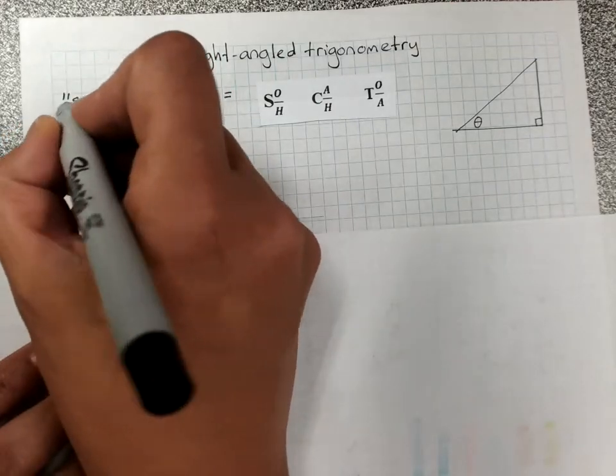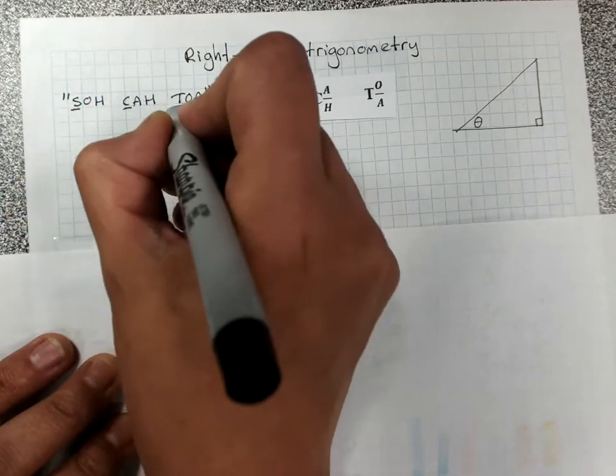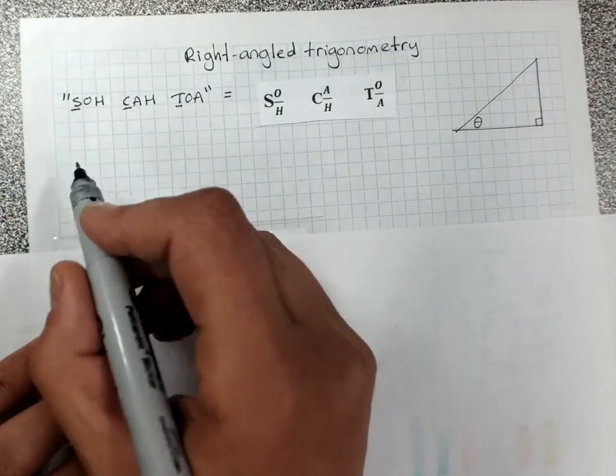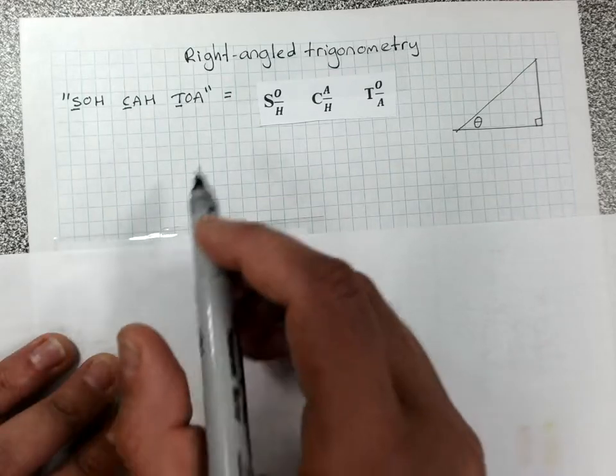So you remember, the first letter, S, C and T, stands for sine, cos and tan, the three different formulas.